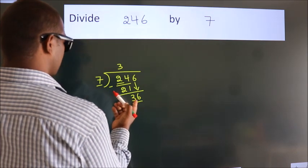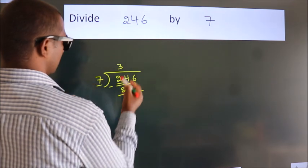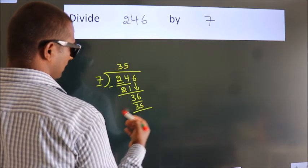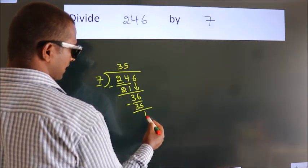A number close to 36 in the 7 table is 7 fives, 35. Now we subtract. We get 1.